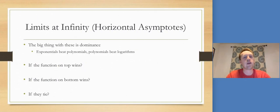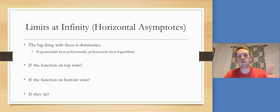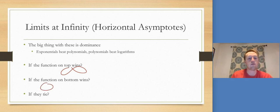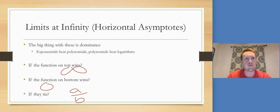The big thing with limits at infinity is dominance. Remember, exponential functions beat polynomials and polynomials beat logarithms. If the function on top wins, we're heading to infinity. If the function on bottom wins, that's going to be zero. And if they tie, we take the ratio of the coefficients, a over b.